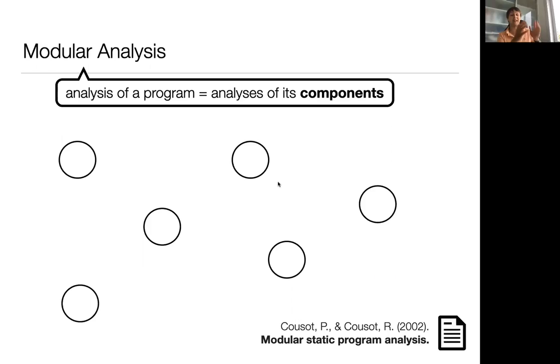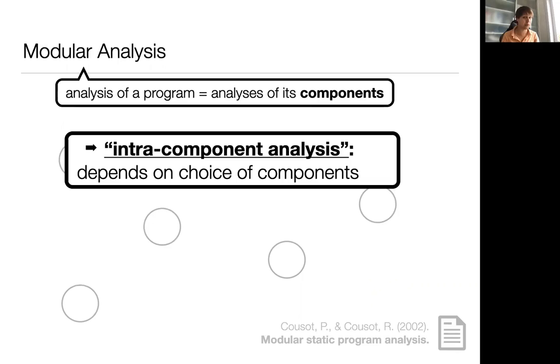In summary, we can say that the modular analysis consists of both an intra-component and an inter-component analysis. The intra-component analysis analyzes a single component, therefore it depends on the choice of components used in the modular analysis. For instance, if components are functions, the intra-component analysis corresponds to an intraprocedural analysis.